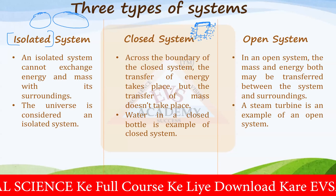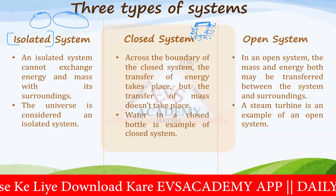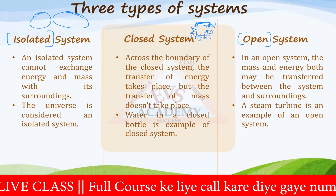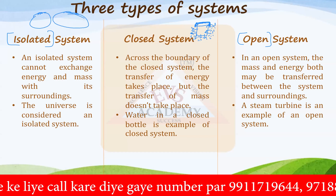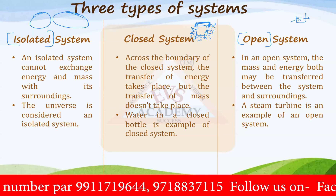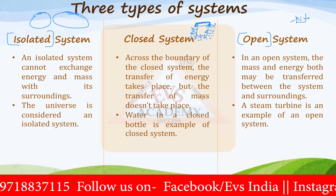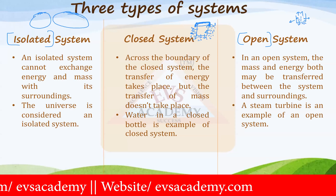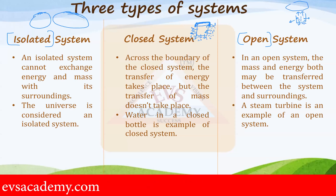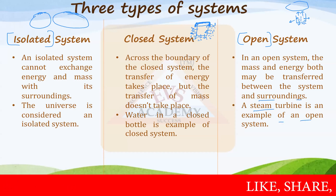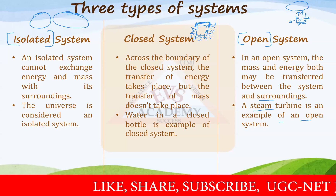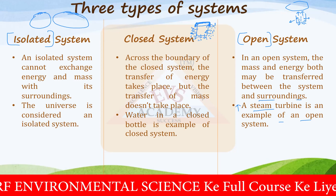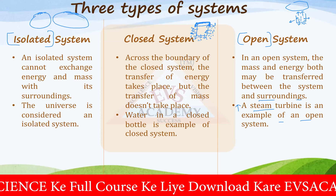Now there is another system called an open system. Suppose you have an open container with boiling water — it is exchanging heat with the surrounding, and some water is converted into water vapor going up into the atmosphere. So there is a transfer of energy as well as transfer of mass. A steam turbine is an example of an open system, where steam moves the turbine and water vapor is released into the atmosphere.